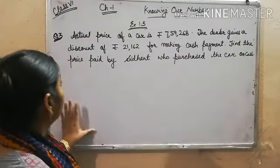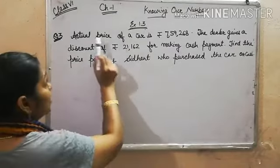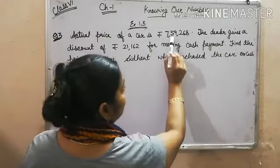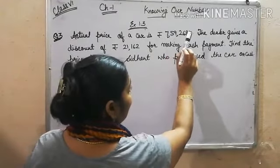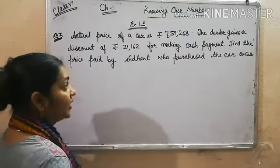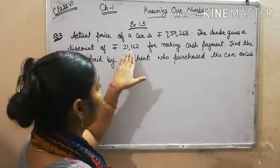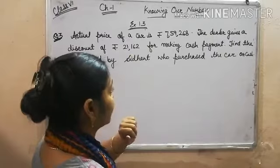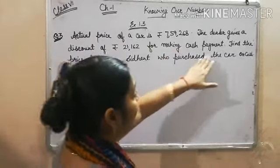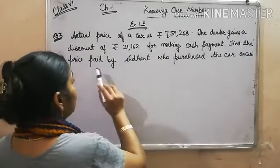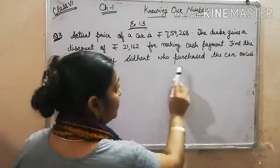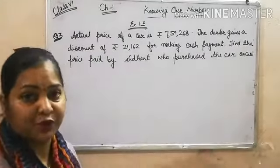In this problem, it is given the actual price of a car is Rs. 759,268. The dealer gives a discount of Rs. 21,162 for making cash payment. Find the price paid by Siddhant who purchased the car on cash.